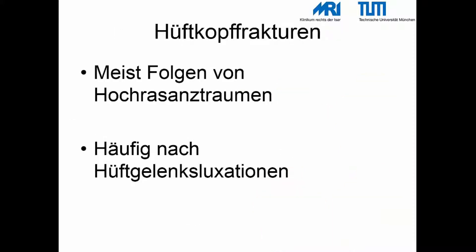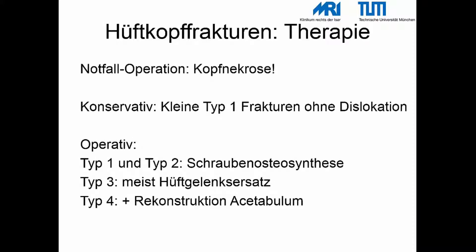Hüftkopffrakturen sind meist die Folge von Hochrasanztraumen und treten häufig nach Hüftgelenksluxationen auf. Aufgrund der Blutversorgung des Hüftkopfes ist die Pipkin-Fraktur eine Notfallindikation. Abgesehen von kleinen, nicht dislozierten Typ-1-Frakturen muss die Therapie operativ erfolgen. Typ-1- und Typ-2-Frakturen können mittels kannulierter Schrauben versorgt werden, wobei die Schraubenköpfe unter das Knorpelniveau zu versenken sind. Typ-3-Frakturen erfordern entweder die Osteosynthese mittels dynamischer Hüftschraube oder den Hüftgelenksersatz. Bei Typ-4-Frakturen muss die Rekonstruktion des Hüftkopfes bei gleichzeitiger Versorgung des Acetabulums erfolgen.